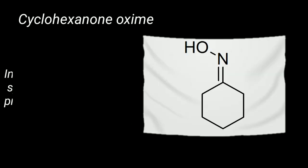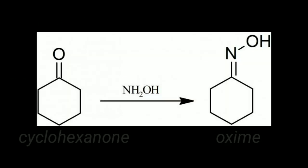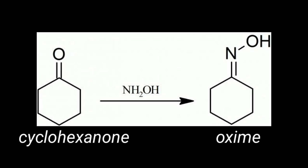Cyclohexanone oxime is a ketoxime, and its importance comes from its industrial application where it is used in the production of caprolactam, which is a precursor for the polymer nylon 6. The preparation involves a simple condensation reaction between cyclohexanone and hydroxylamine.